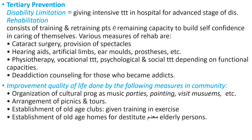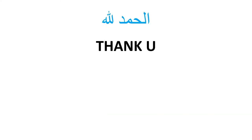Tertiary prevention involves disability limitation, which equals rehabilitation and improvement of quality of life. This is done by the following measures in the community: organization of cultural programs, arrangement of picnics, establishment of old age clubs, and establishment of old age homes. Alhamdulillah, thank you for your good listening.